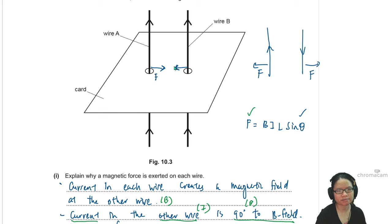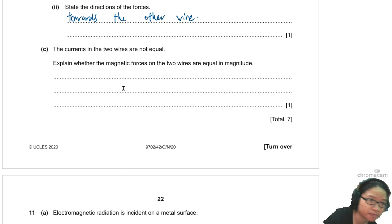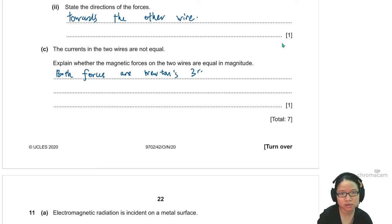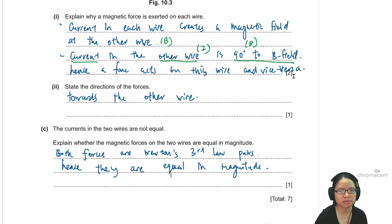Alright. Next. Last part, part C. The current in the two wires are not equal. Explain whether the magnetic forces are equal in magnitude. Yeah, I just explained Newton's third law. So you can say both forces are Newton's third law pairs. Hence, they are equal in magnitude. That's it. This is a pretty standard question. Sometimes they will ask you to calculate the force, so go and look up the practice questions that need you to calculate the force between the wires. But that's it for this one.